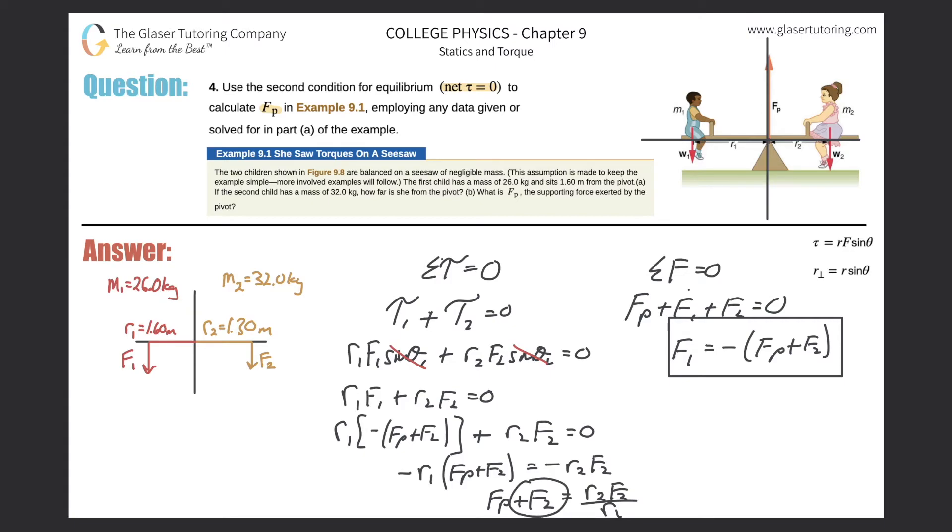And then I would just subtract this term on over to the right hand side. So I'm going to subtract F sub two here, and that will equal now F sub P. So here's the formula. This is it. Now all we got to do is just plug everything in.